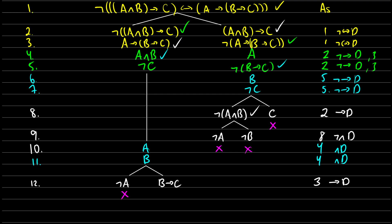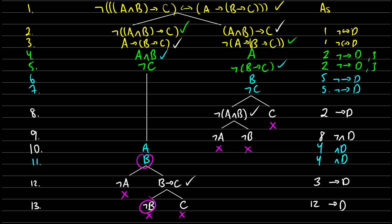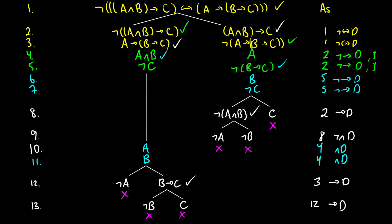Our not-a branch closes because we have not-a and a — contradiction. Our last step is another disjunction with 'b arrow c', which breaks off into two paths. By the conditional, either b is false or c is true, meaning we get either not-b or c. This comes from line 12, arrow decomposition. At this point we can close these branches because we get not-b and b — contradiction — and not-c and c — contradiction. Therefore everything closes.